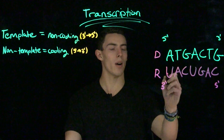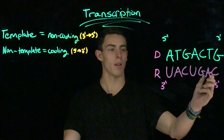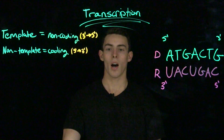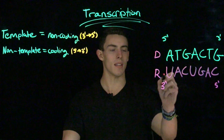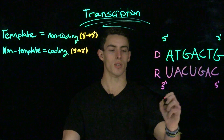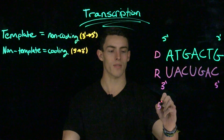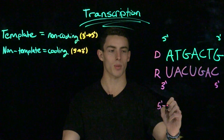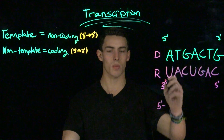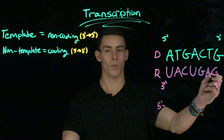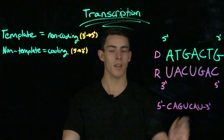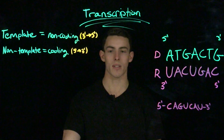So now we have our RNA template, but it's written in the 3' to 5' direction. On an exam, you may see this as an answer choice. However, generally your professor is going to want you to have it written in the 5' to 3' direction. So let's practice by turning this sequence around — we write it from 5' to 3', and there we have it. This is our RNA sequence.